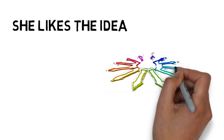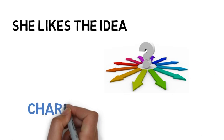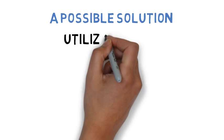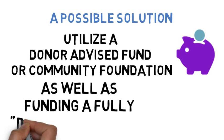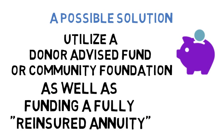But she'd like more choice and control over the gift portion of the charitable gift annuity. A possible solution: she could utilize a donor advised fund as the named charity, as well as funding a fully reinsured annuity so the ultimate gift can actually be funded today, not decades from now.